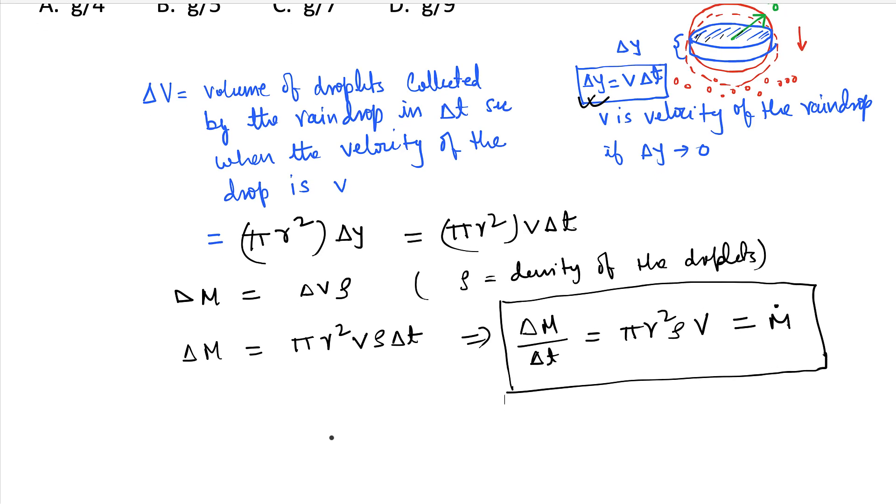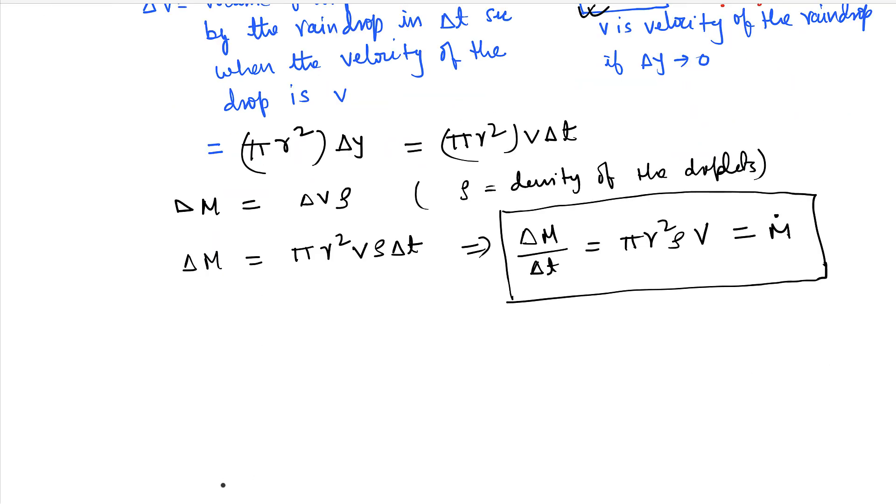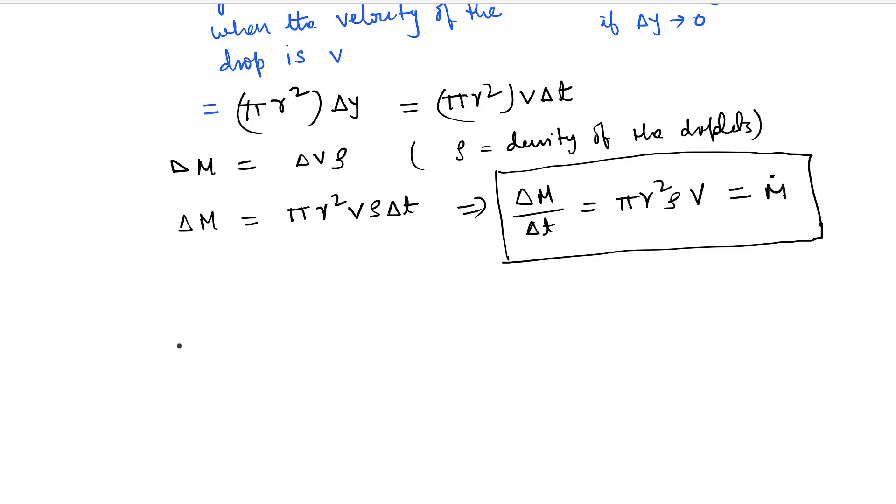So this question also explains how we manipulate simple things in order to solve the question. There are certain things which are given, and we start manipulating those things. So other things that you know, mass of the raindrop is volume times the density, and volume is 4 by 3 pi R cube rho. So let's call this M.